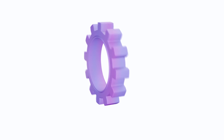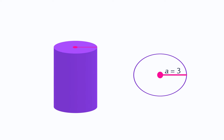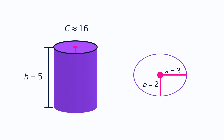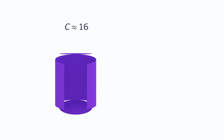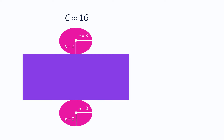Let's look at an example. You want to find the surface area of this elliptical cylinder. The length of the semi-major axis A is 3, and the length of the semi-minor axis B is 2. The height of this cylinder is 5, and the circumference is approximately 16. To find the surface area, you need to add together the areas of the faces of the cylinder. There are a total of 3 faces: the bases, which are 2 identical ellipses, and the curved surface.